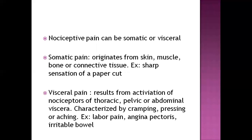Nociceptive pain can be divided into somatic and visceral pain, as both soma and viscera refer to the tissues and internal parts of the body. Somatic pain originates from the skin, muscle, bone, or connective tissue — for example, the sharp sensation of a paper cut. Visceral pain is activated from inside and can be cramping, aching, or pressing pain. Examples of visceral pain include labor pain or angina pectoris, originating from the viscera and internal muscles.